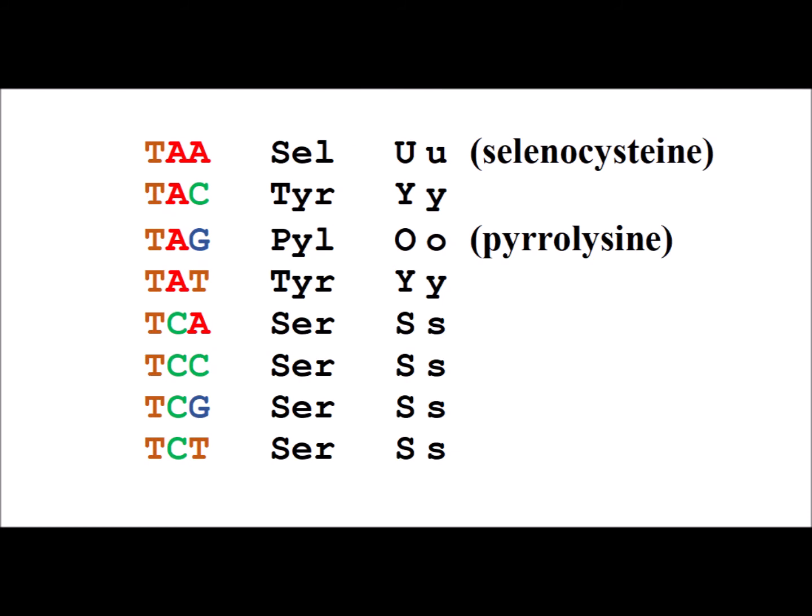We also note the fact in some organisms, the codon TAA codes for the amino acid selenocysteine, which has the one-letter code of U, and similarly, TAG codes for the amino acid pyrrolysine, whose one-letter code is O. The reason we did this is because there is no other way to get the important vowels of O and U into this system.